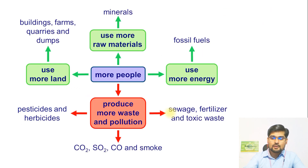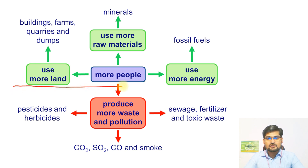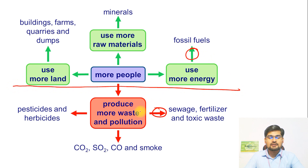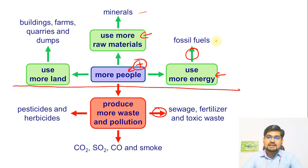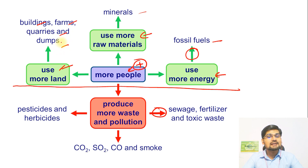When we look at this flow diagram, it has two parts. The green part and the red part. Look at the green: more people means population increase, so more use of raw materials like minerals, more use of energy like fossil fuels, and more use of land — buildings, farms, quarries, dumps, and so many other activities that we are involved in.